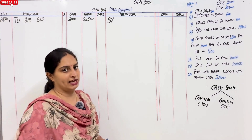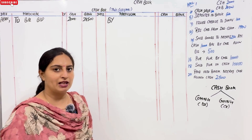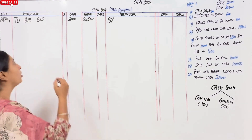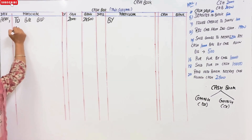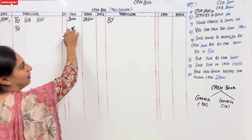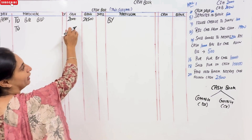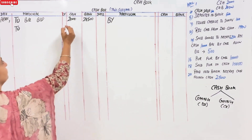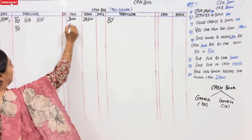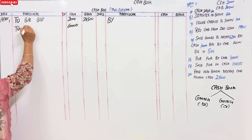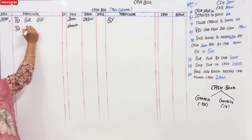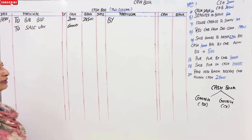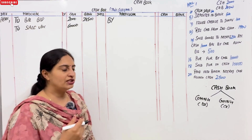Next is cash sale. Cash sale means cash is coming in. So first, you will welcome it on the debit side and add the amount in the cash column. The amount is 60,000. First you will add the amount, and then write the explanation. How did it come? You sold goods. Next: deposit in bank.